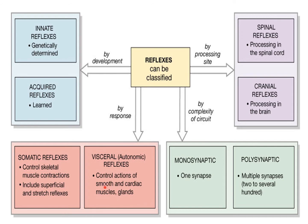Based on complexity of the circuit, it may be monosynaptic or polysynaptic. If there is a single synapse in the pathway, it is monosynaptic. If there are more than two synapses, it is polysynaptic. There is even one exception — an asynaptic reflex, where there is no synapse at all. In 99.99% of cases the synapse is present, but there is one example in the body with no synapse — we will discuss that in the next slide. The basic classification methods are: by development, by processing side, by complexity of the circuit (pathway), and by the response.